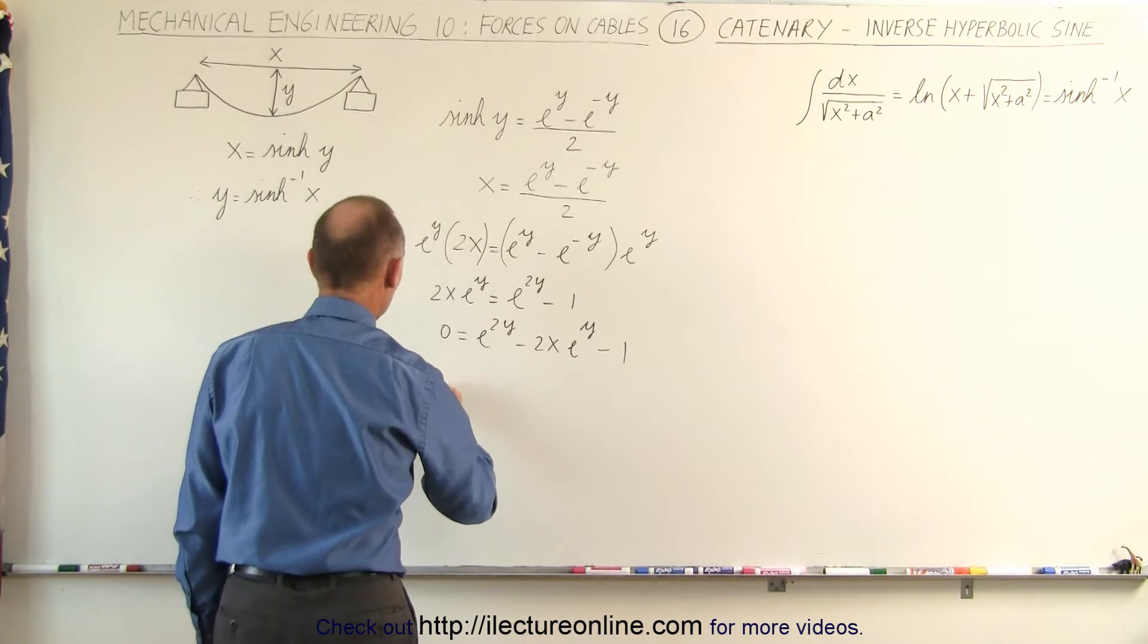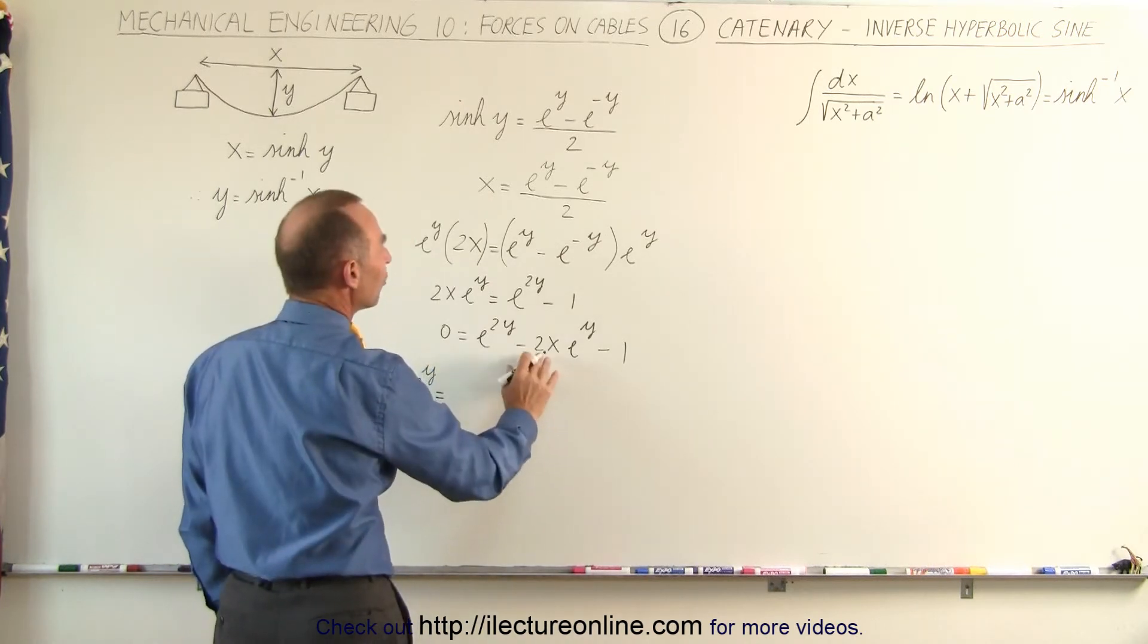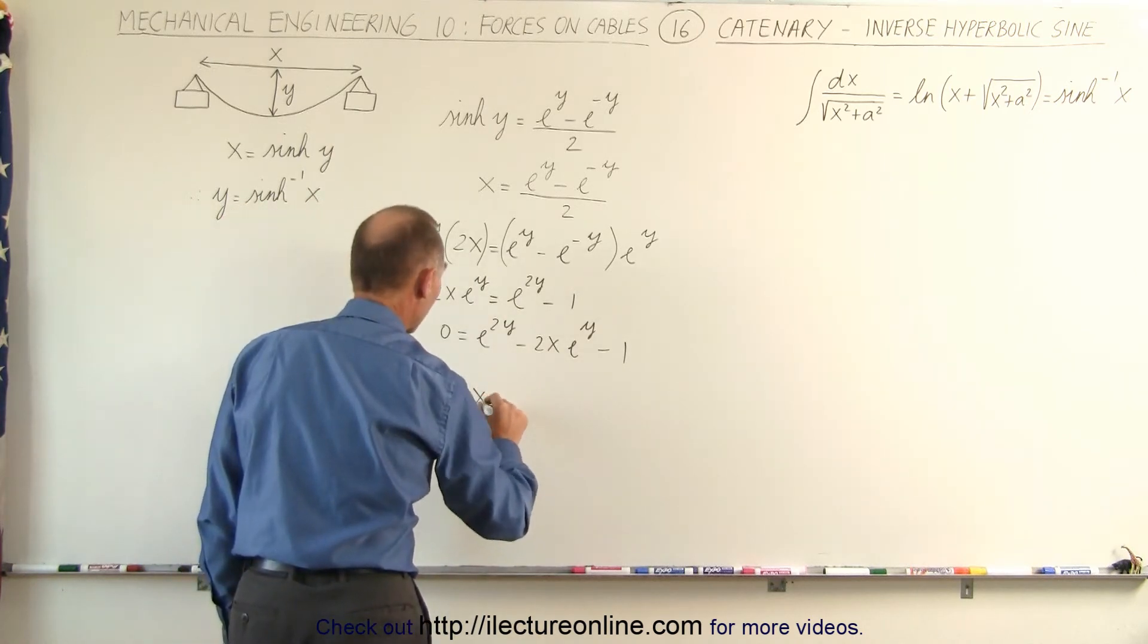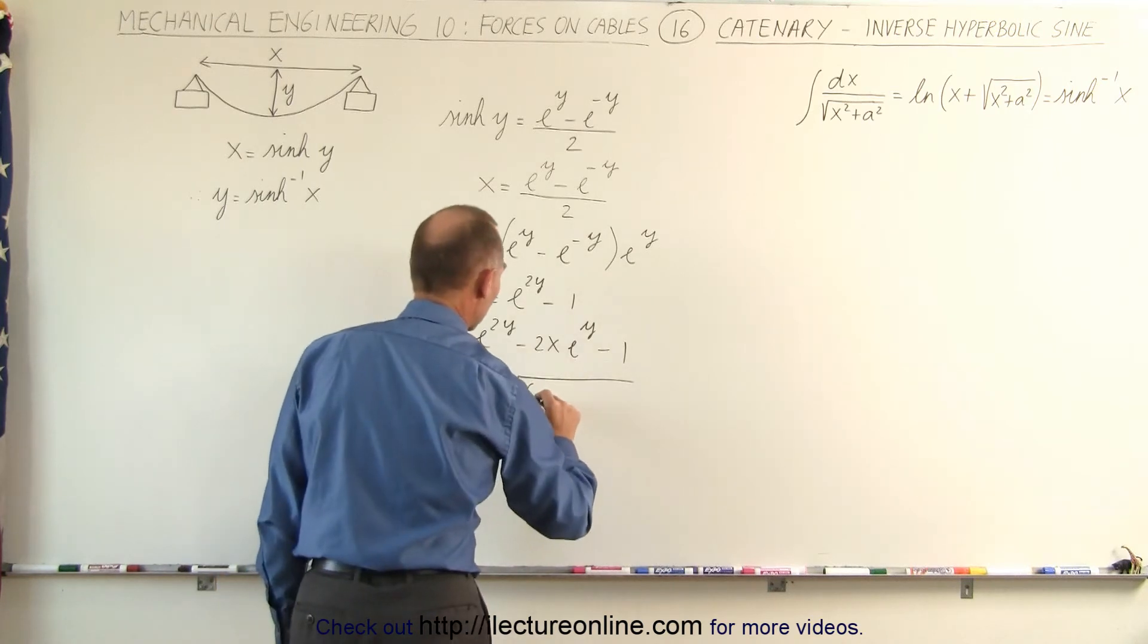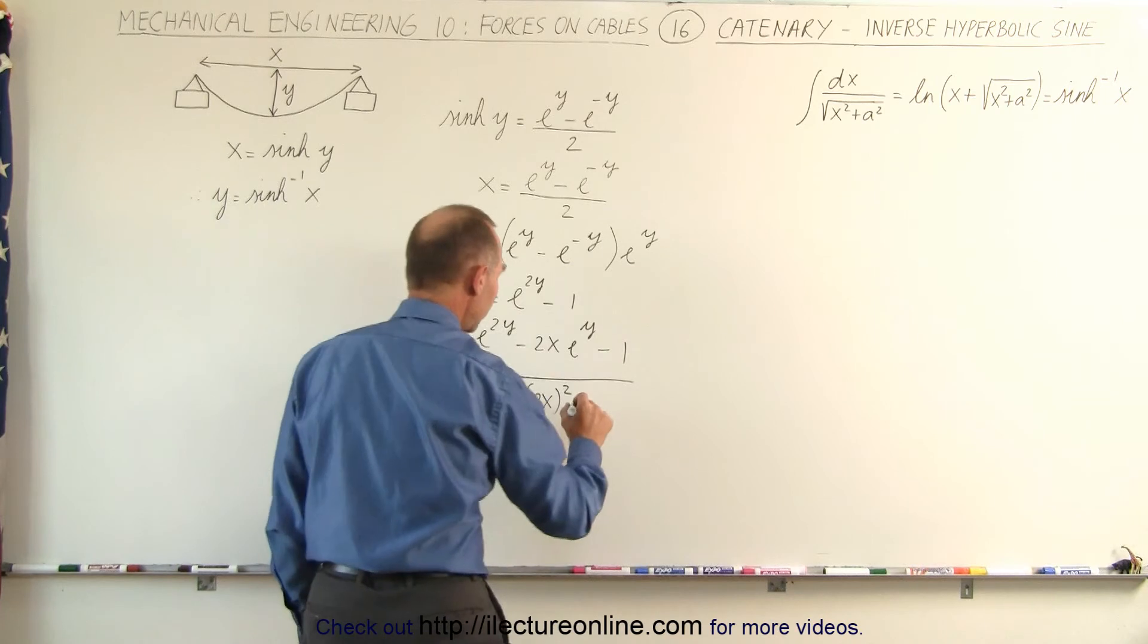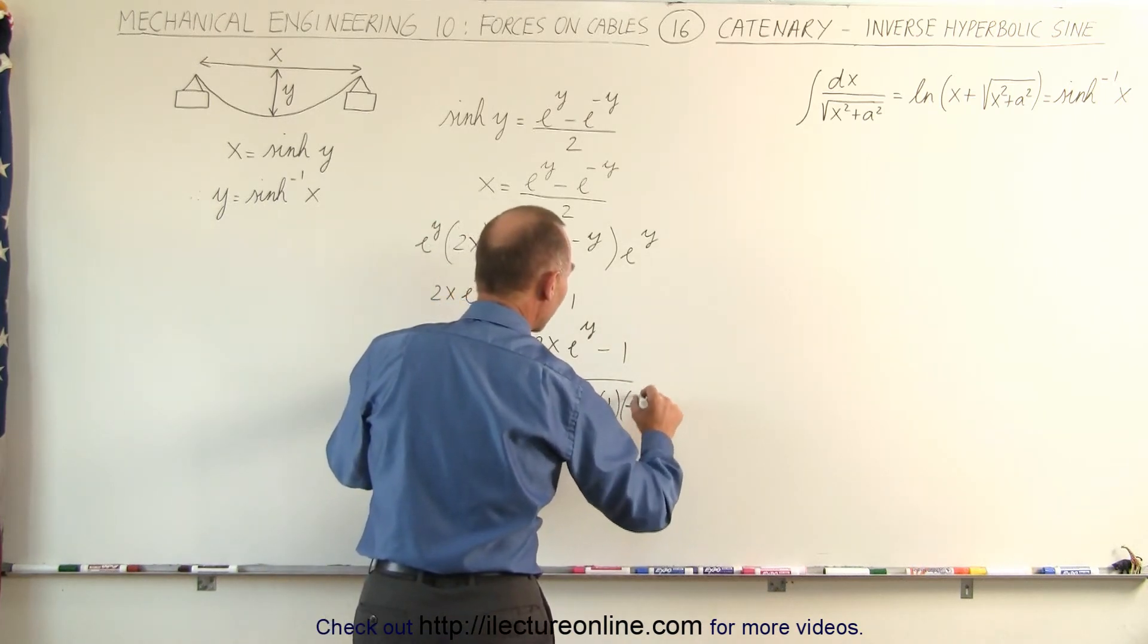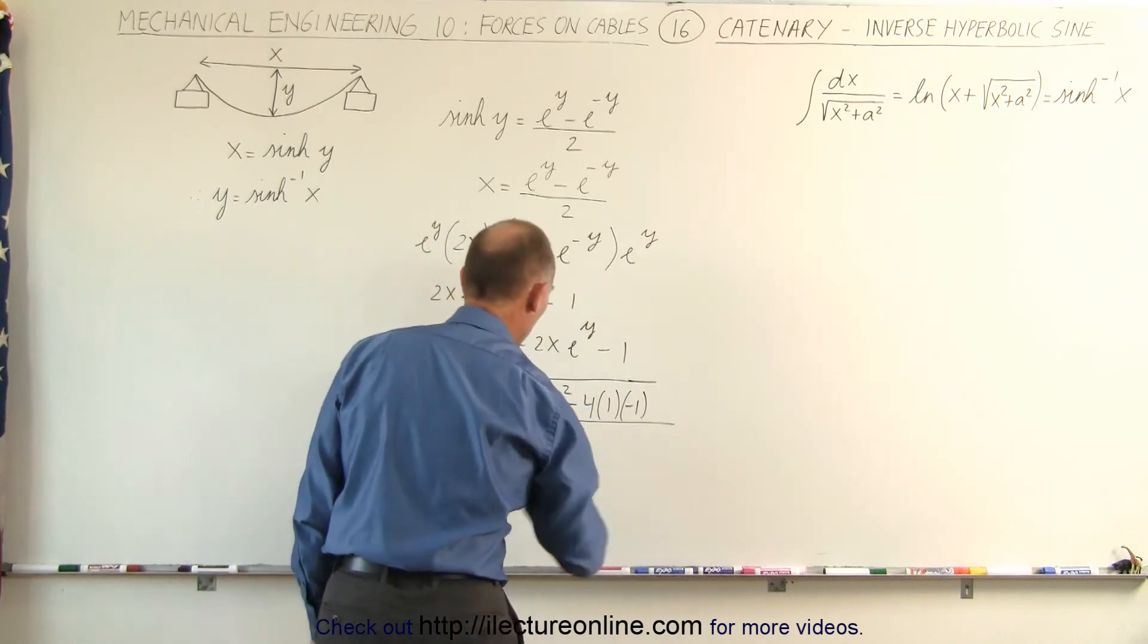We can then say that e to the y is equal to minus b, since b is minus 2x, minus becomes plus. So we have 2x plus or minus the square root of b squared, which is minus 2 squared, or simply 2x squared, minus 4 times a, which is 1, times c is minus 1. And the whole thing divided by 2a, which is 2.